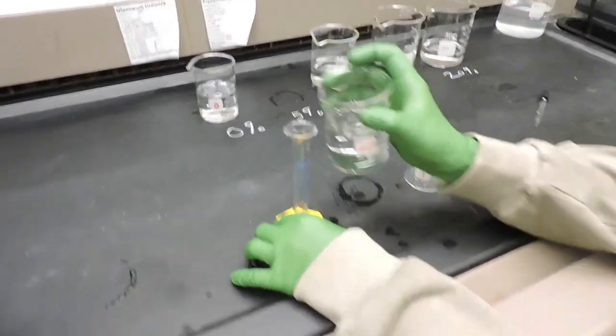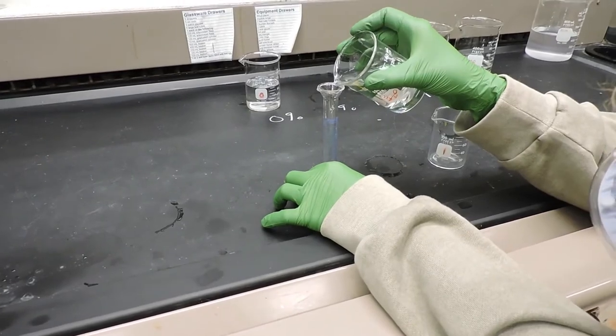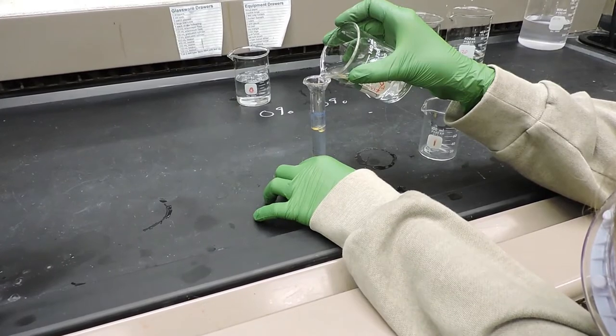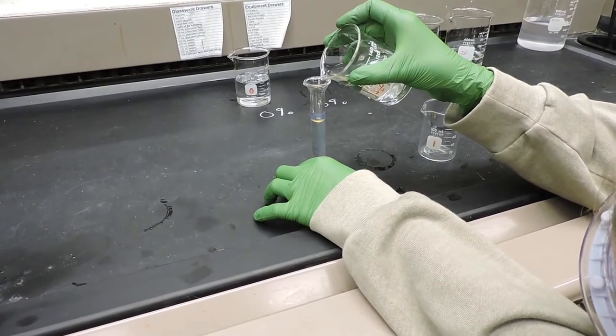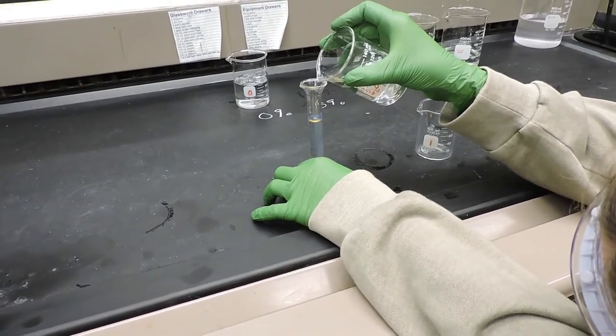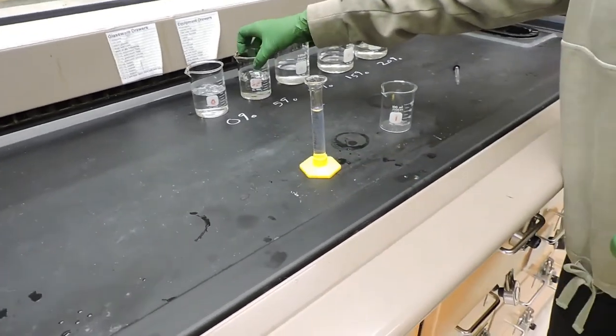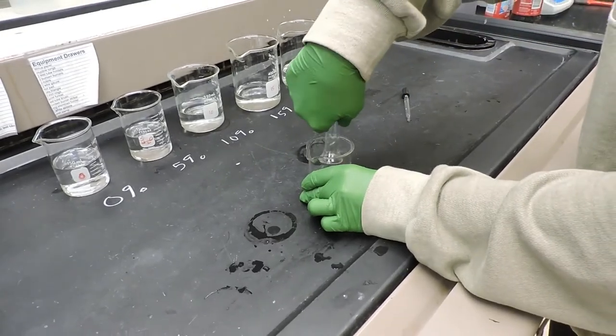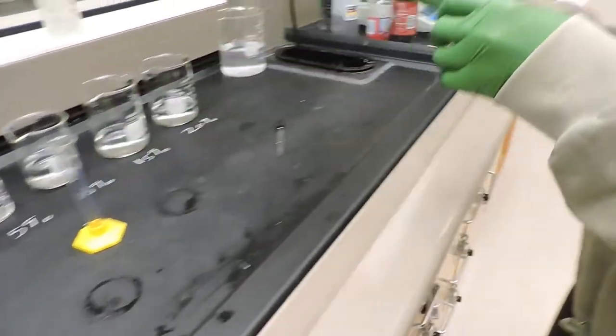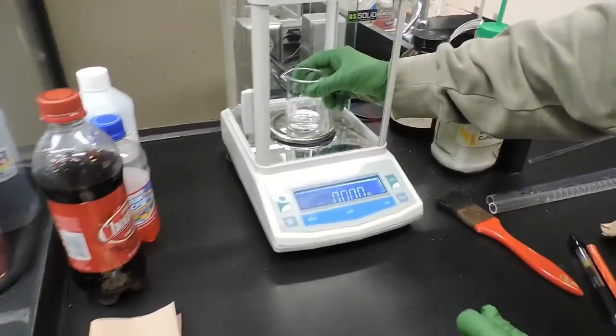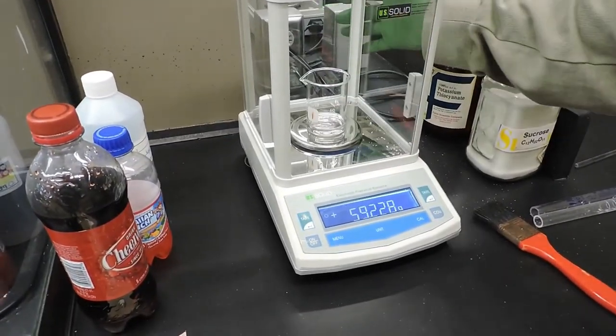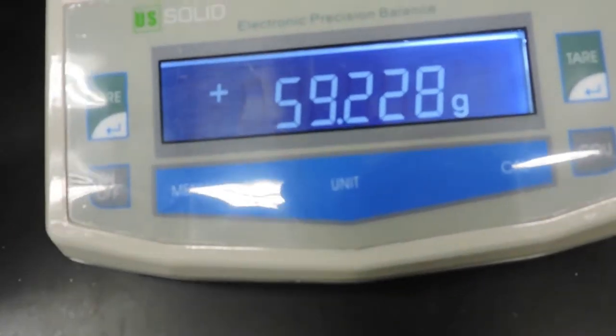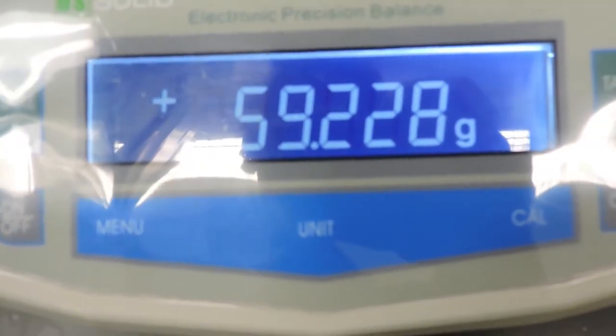This one will be the 5% sugar solution. And then we'll weigh it again. The mass of this 5% solution, 10 milliliters, will be 59.228 grams.